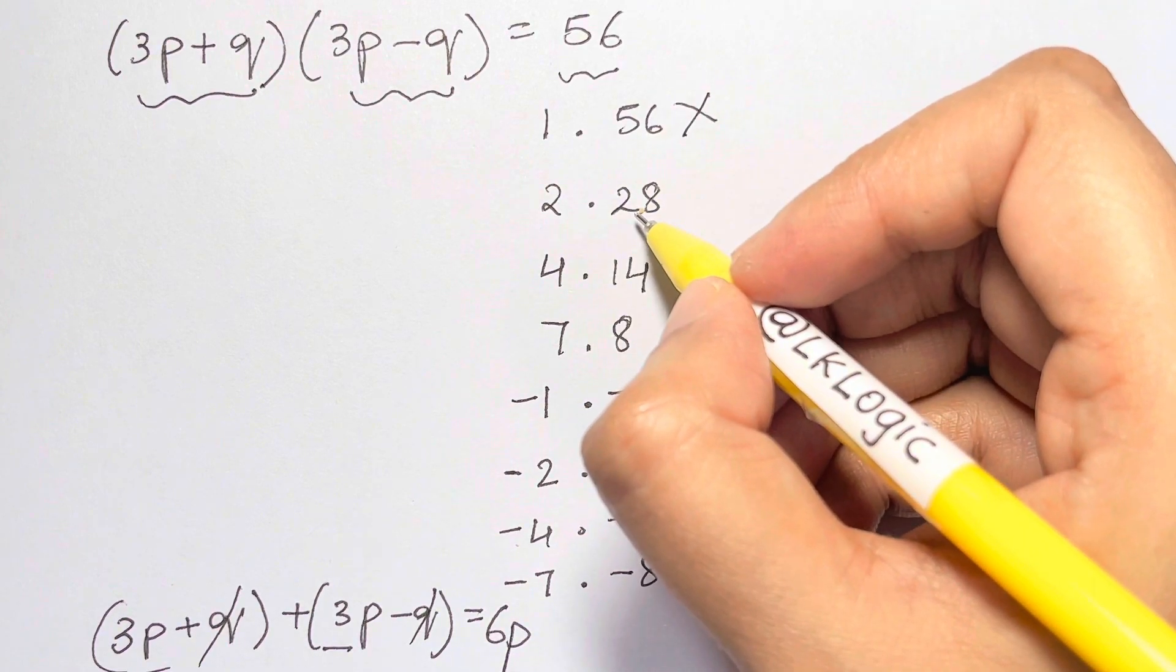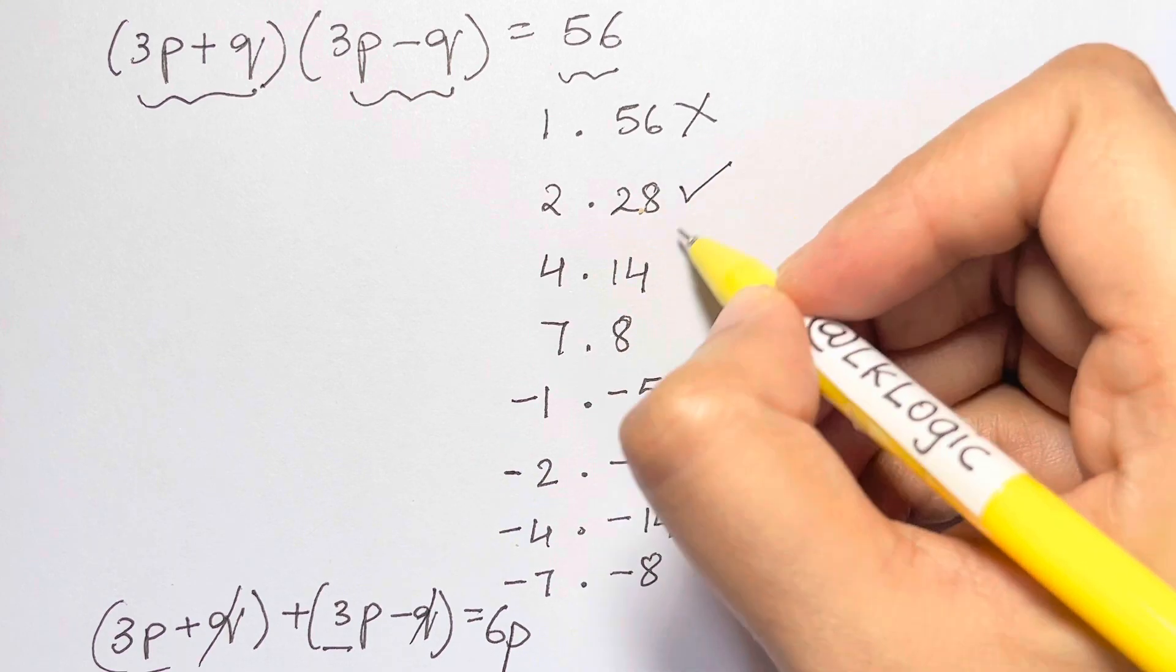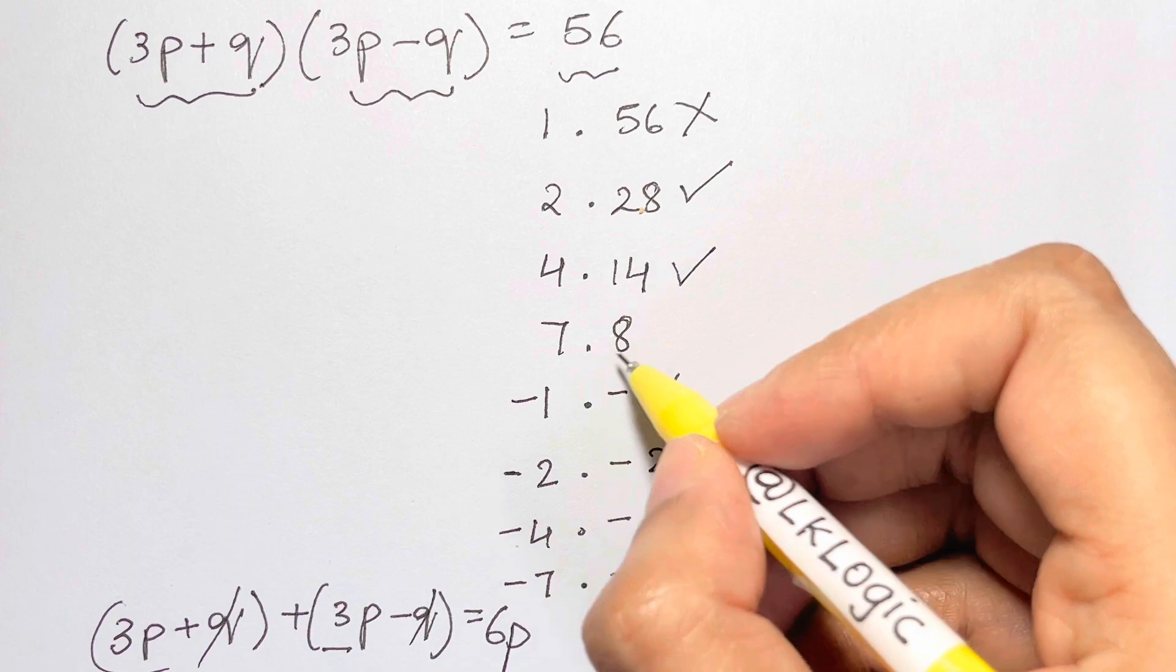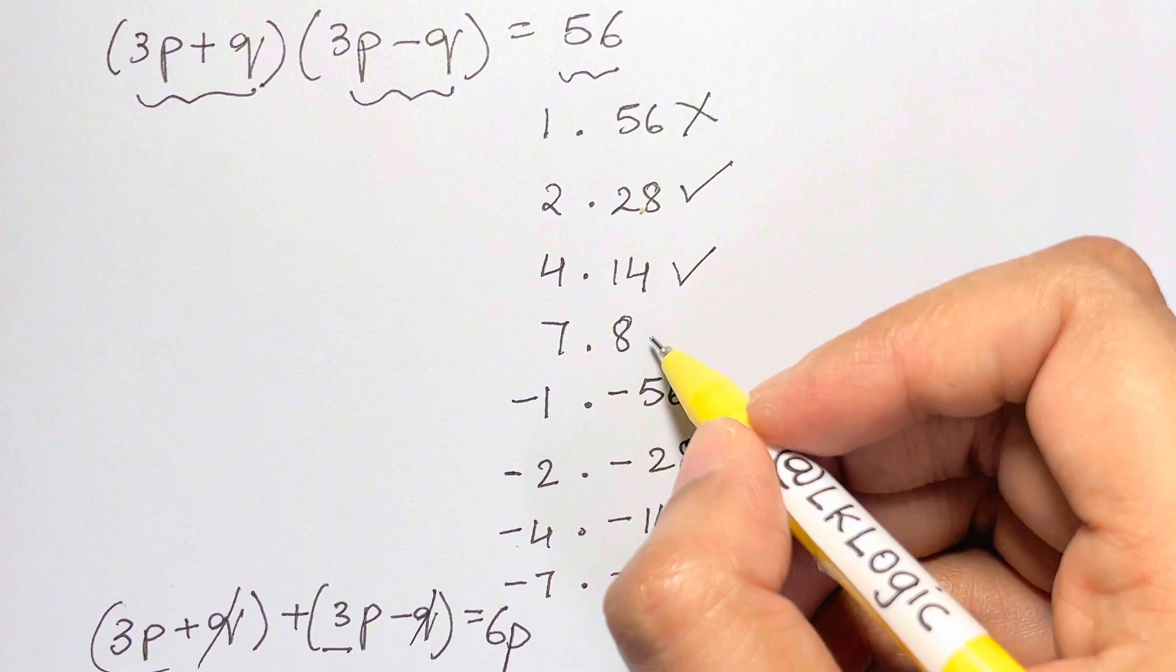28 + 2 = 30, that is a multiple of 6. 4 + 14 = 18, is a multiple of 6. 7 + 8 = 15, not a multiple of 6.